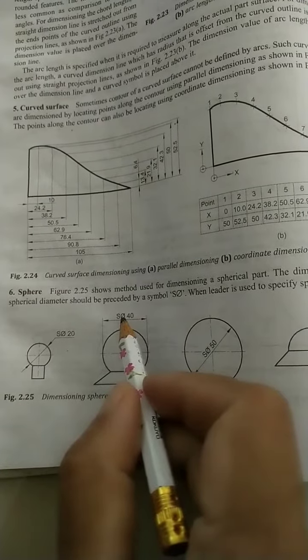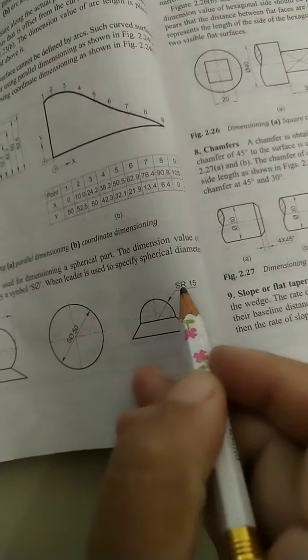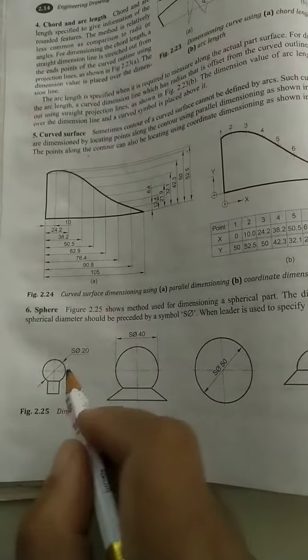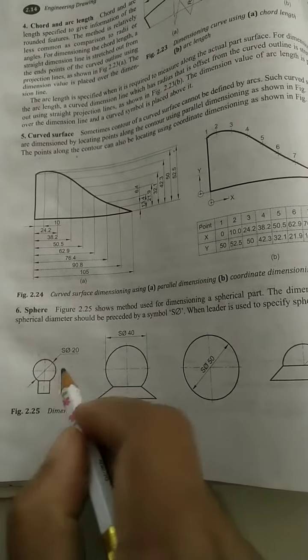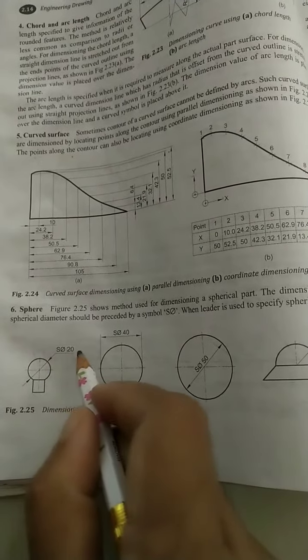In all the cases we are writing sphere diameter. If radius is given, write sphere radius SR. In all cases, this is a small sphere, that's why we are keeping the arrows outside. Just do horizontal line, mark the value sphere diameter 20.